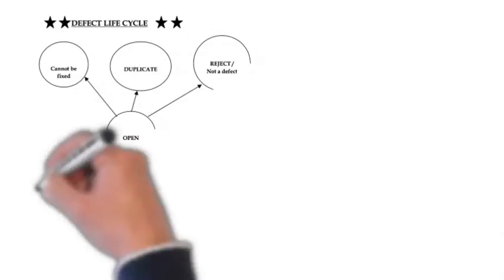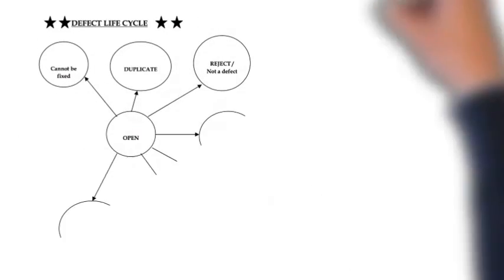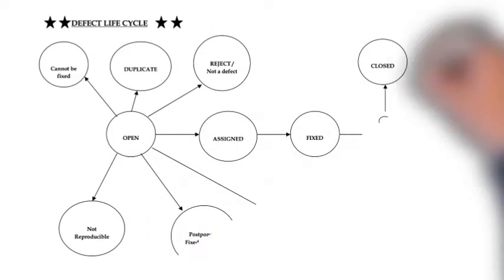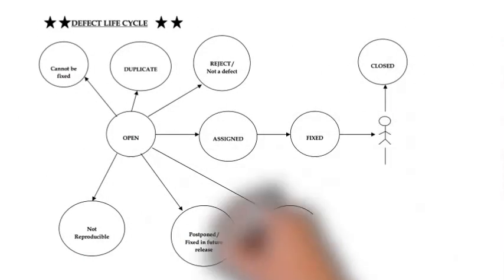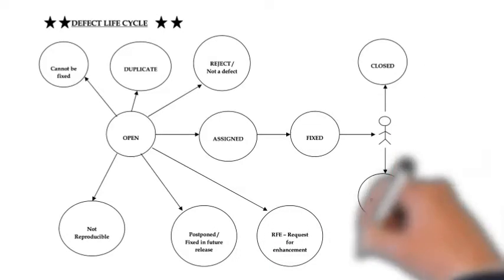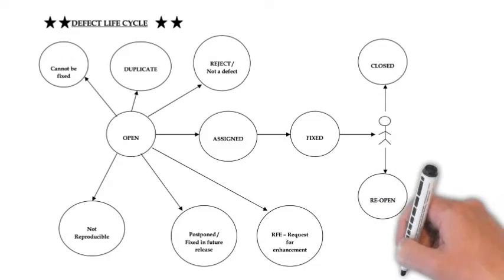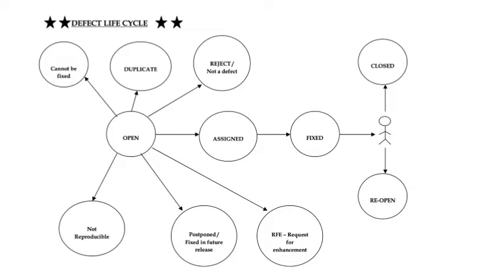Before starting, let's revise some concepts. What is a defect? A defect is a system error that doesn't allow the intended action to be completed. Finding defects is the tester's most important task. It is important to start testing as early as possible because defects can be found throughout the entire software development process.